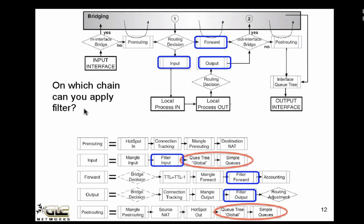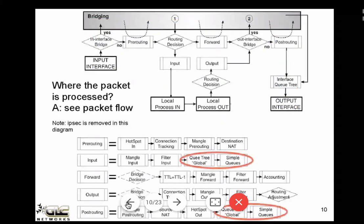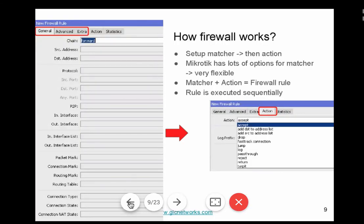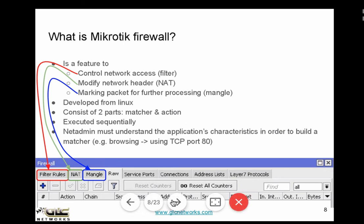MikroTik RouterBoard or RouterOS has three features for firewalls: filter, NAT, and mangle. In Linux we call them the filter table, NAT table, and mangle table. There is actually one more table called raw, but we won't talk about the raw table here.